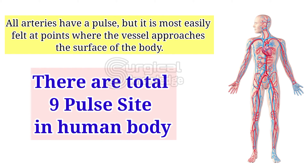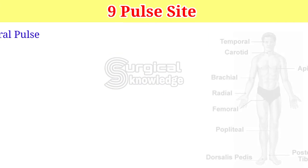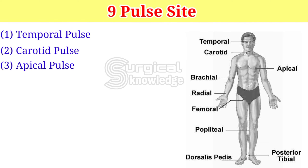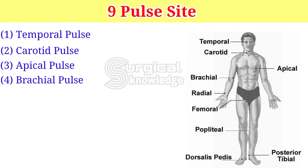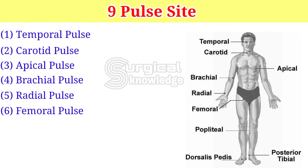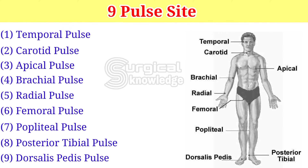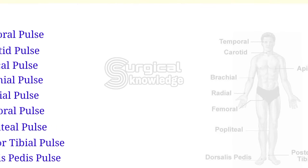There are a total of 9 pulse points in the human body. Number 1, temporal pulse. Number 2, carotid pulse. Number 3, apical pulse. Number 4, brachial pulse. Number 5, radial pulse. Number 6, femoral pulse. Number 7, popliteal pulse. Number 8, posterior tibial pulse. Number 9, dorsalis pedis pulse. Now we will explain one by one.